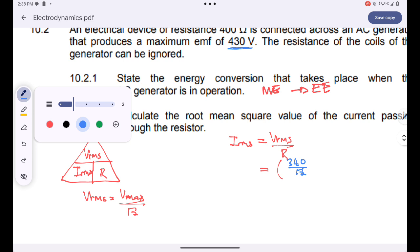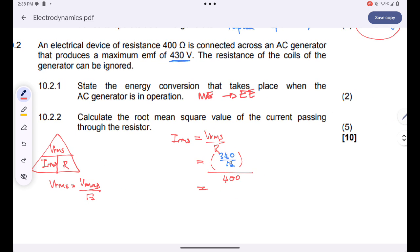That's the value of our RMS voltage. We divide this by our resistance, which is just 400. Then we just go and punch our calculators to find the RMS current. 340 divided by the square root of 2 and all divided by 400.